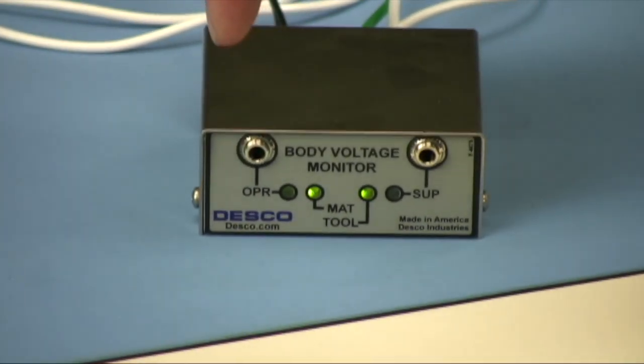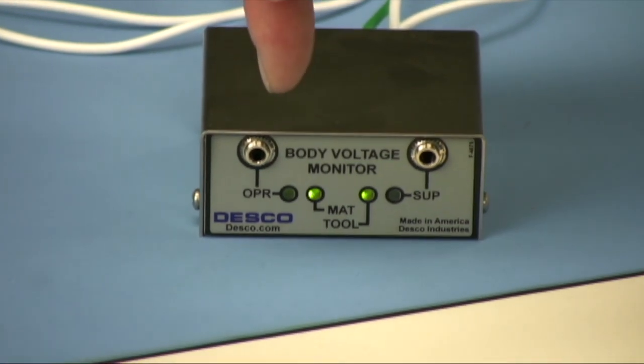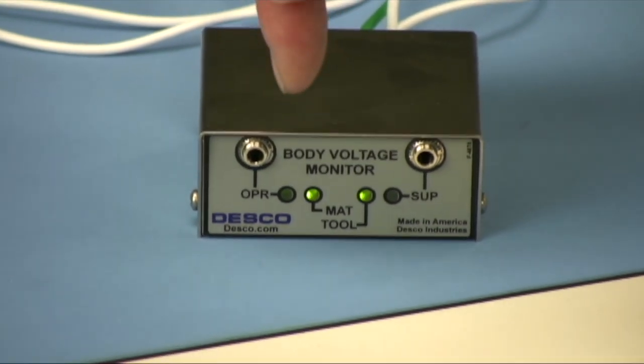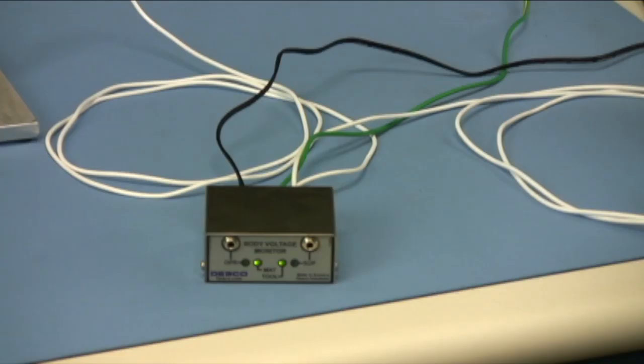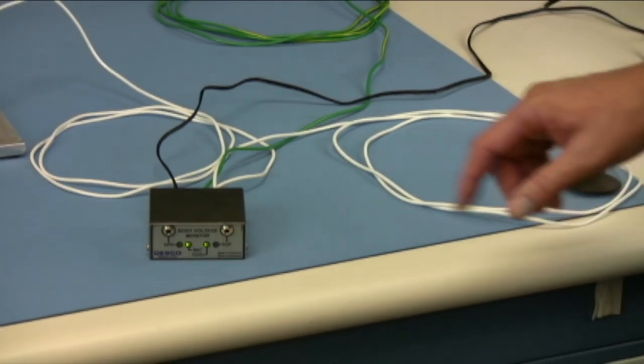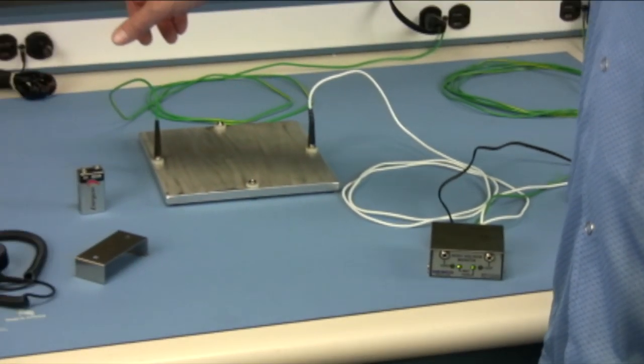Each circuit has a dedicated LED for operator, mat, tool, and for a supervisor. The mat ground circuit is shown on the right and the utility ground is shown on the left.